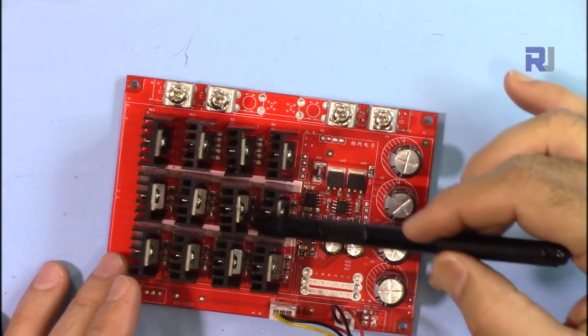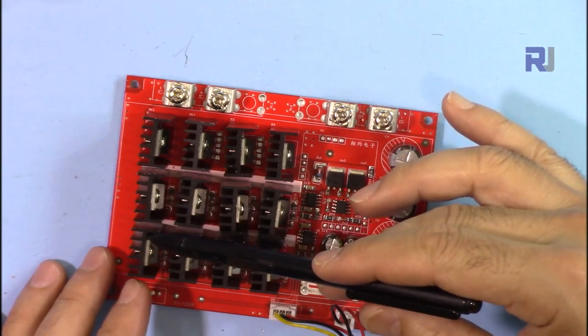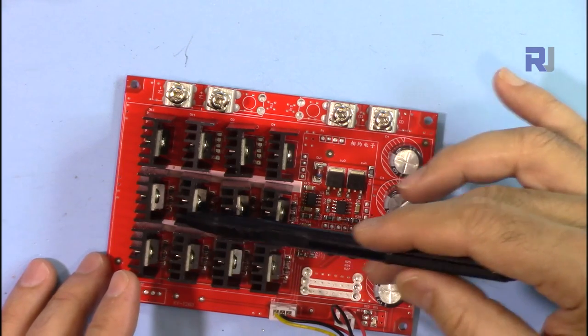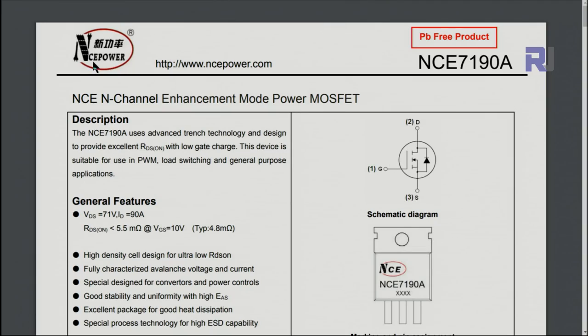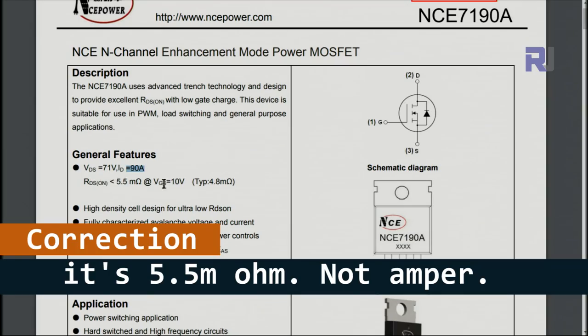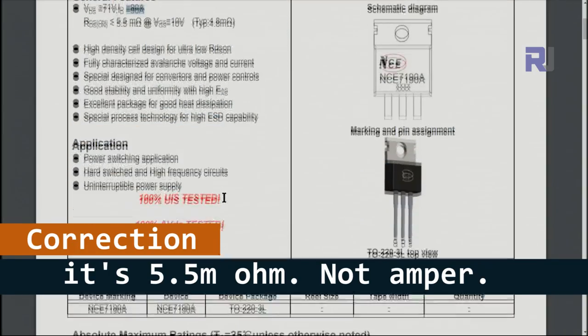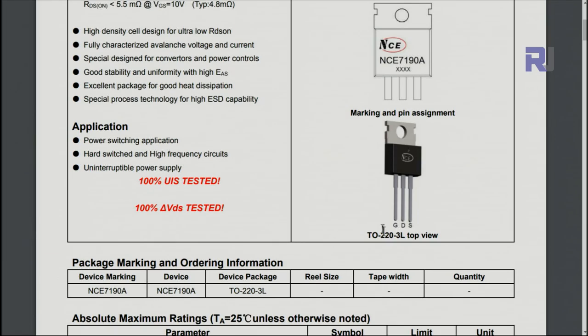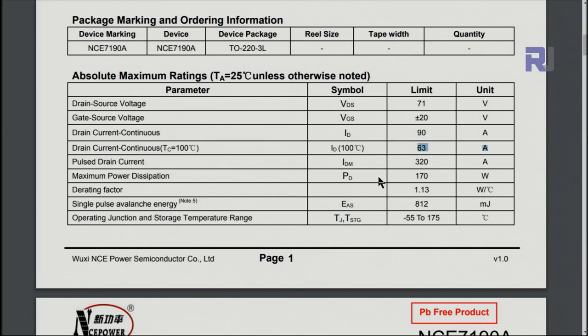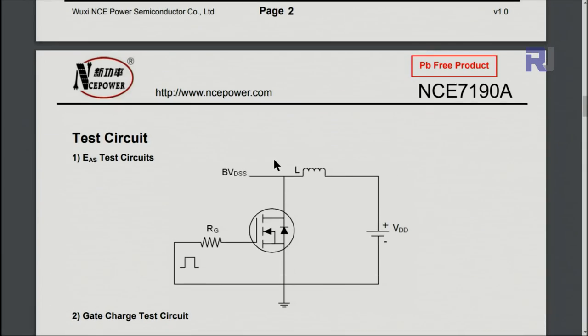And here we have eight MOSFETs. The MOSFET is NCE7190A which can work up to 21 volts and 90 ampere. It's made by NCE power semiconductor. The maximum current is 90 ampere and the drain source resistance when it's turned on is 5.5 milliohm at 10 volts, typically 4.8 milliohm. The continuous drain current is 90 ampere at 100 degrees Celsius, continuous current is 60 ampere. I'm gonna provide you the link for the datasheet.